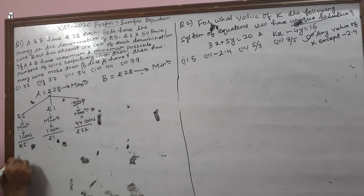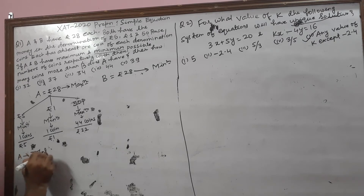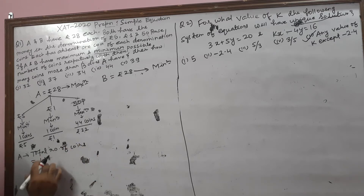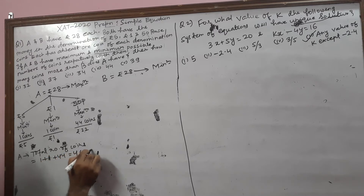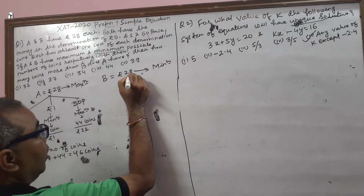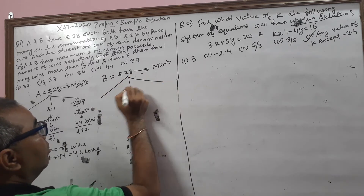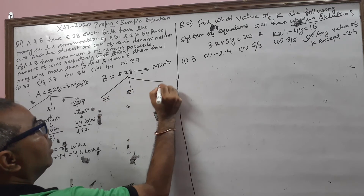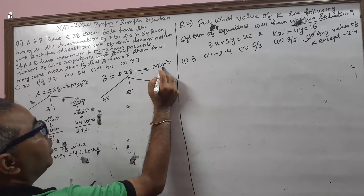So on that condition, A has the total number of coins: 1 plus 1 plus 1 plus 44 equals 46 coins total that A has.